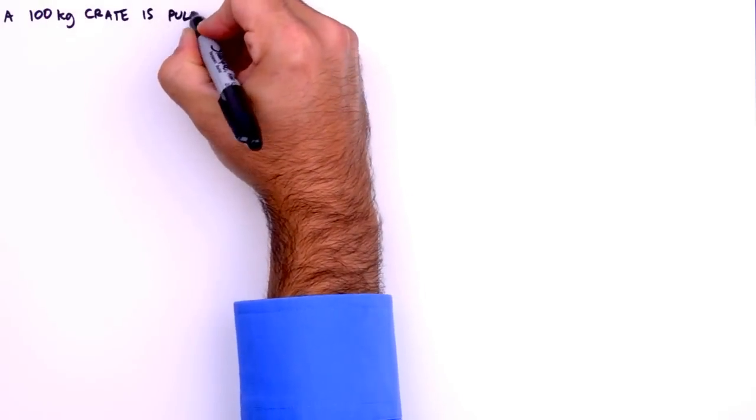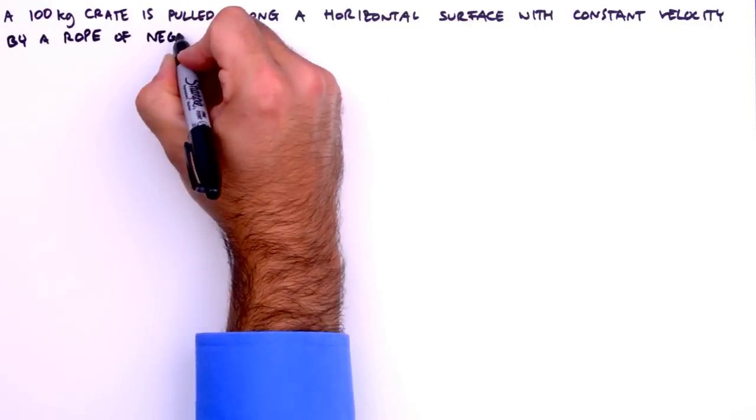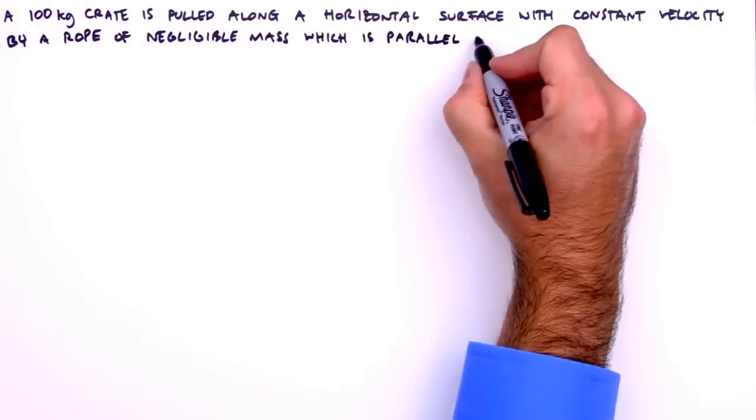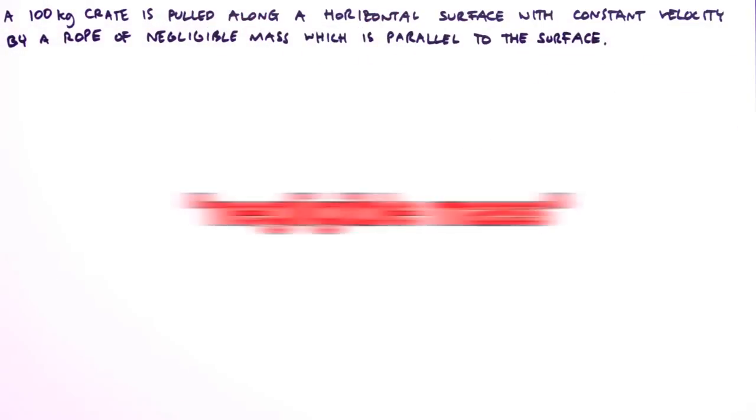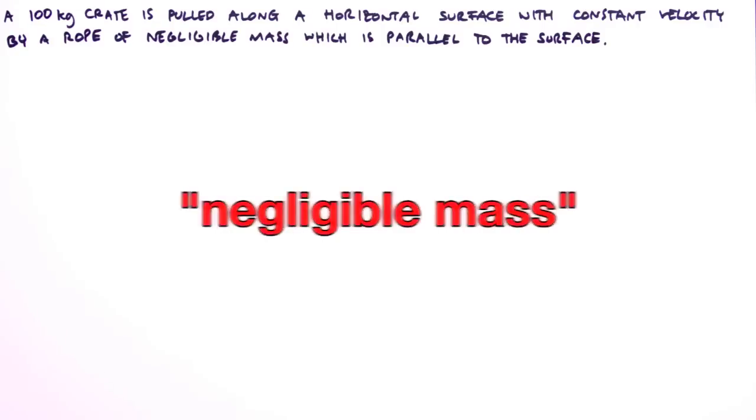In this problem, a 100 kilogram crate is pulled along a horizontal surface with constant velocity by a rope of negligible mass, which is parallel to the surface.